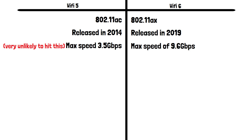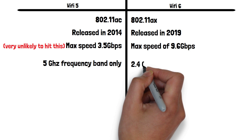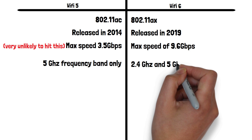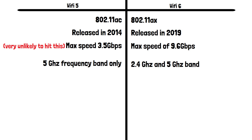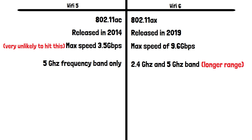Wi-Fi 5 uses the 5 gigahertz frequency band only, whereas Wi-Fi 6 can use both the 2.4 gigahertz and 5 gigahertz bands. The 2.4 gigahertz band has a lot of other household devices using it and therefore experiences a lot of interference causing slower speeds, so being able to use this band may not sound like an advantage. However, signals in the 2.4 gigahertz band tend to have a higher range and are better at penetrating walls than 5 gigahertz signals, meaning you can stay connected to the Wi-Fi from further away with Wi-Fi 6.